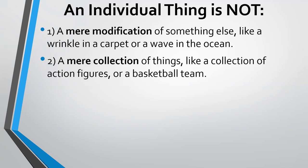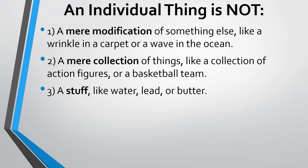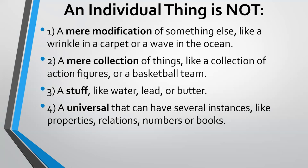It also says an individual thing is not a mere collection of things — like a collection of action figures, a basketball team, or a collection of atoms or molecules. The common Western metaphysics says there's something that the collection actually makes that exists and is real, like a tree or a cat. And an individual thing is not a stuff — a technical philosophical term. Think of things like water, lead, or butter. The common Western metaphysics says it's not just a matter of stuff; there actually are individual things, and those aren't stuffs.